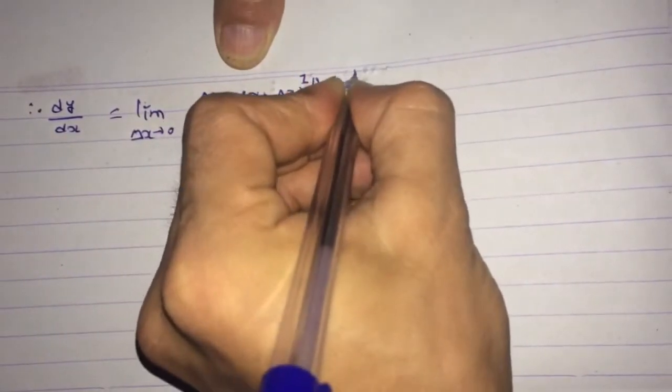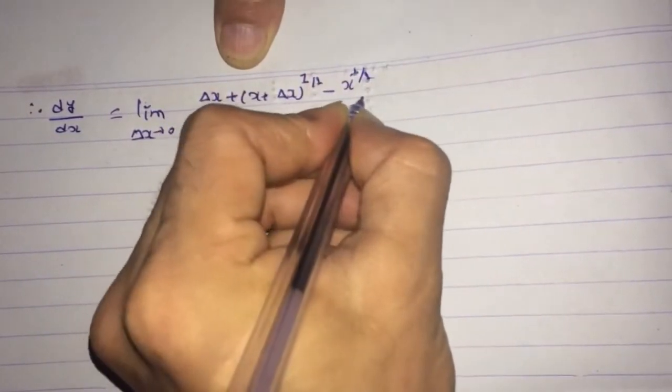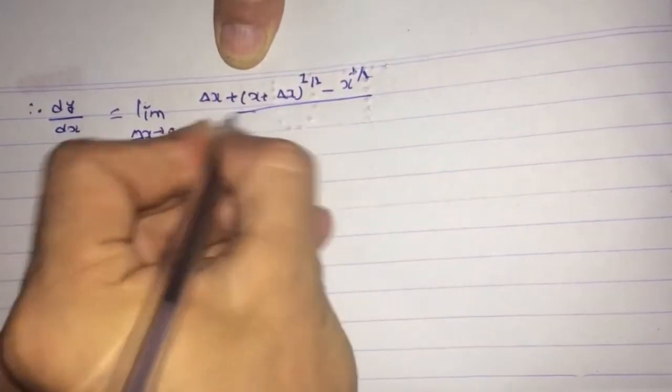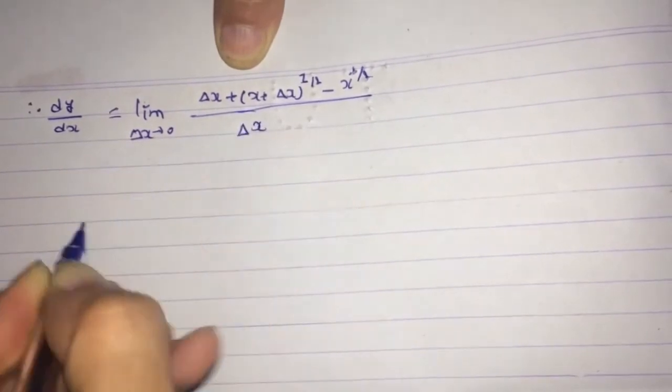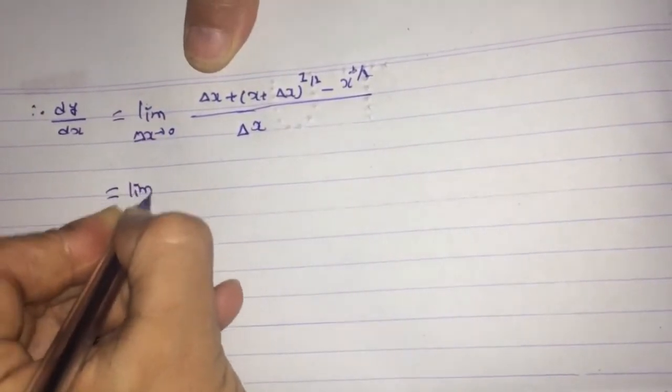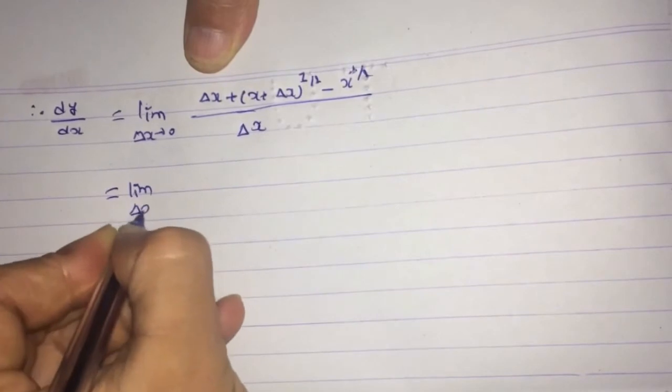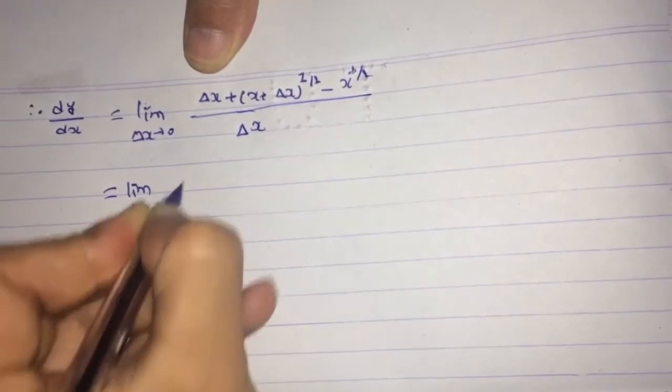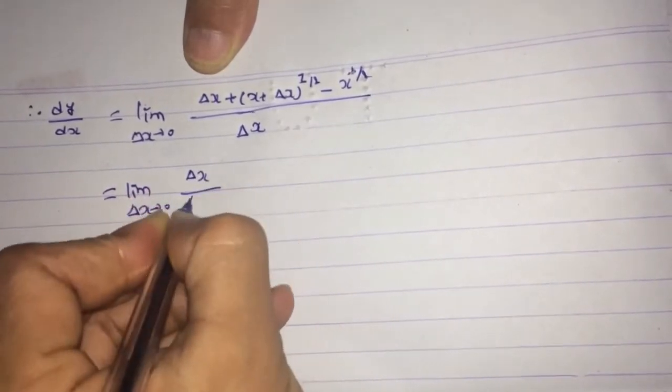On a new page: dy/dx is equal to limit as δx tends to 0 of [δx plus (x + δx)^(1/2) minus x^(1/2)] all divided by δx.